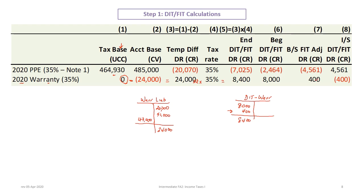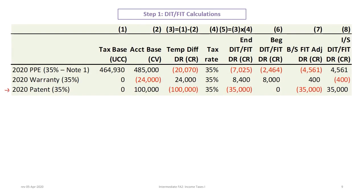The next item relates to the patent. All of the patent is deductible for tax purposes and not for accounting purposes, so the tax base is zero. We subtract $100,000 to give us negative $100,000, and times 35% equals a $35,000 deferred income tax liability for the patent. With an ending balance of $35,000 and a beginning balance of zero, we need an adjustment of $35,000: credit the deferred income tax account and debit the deferred income tax expense on the income statement.